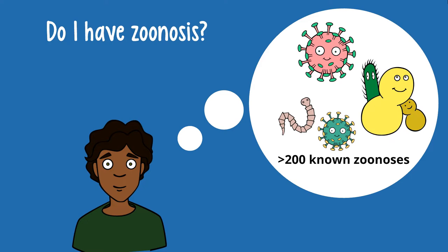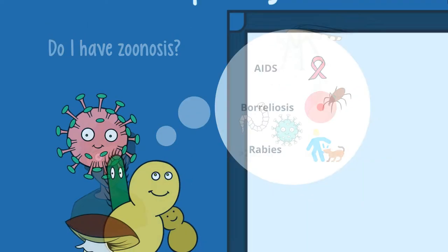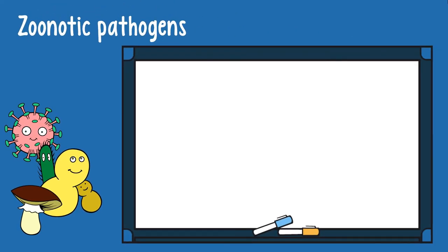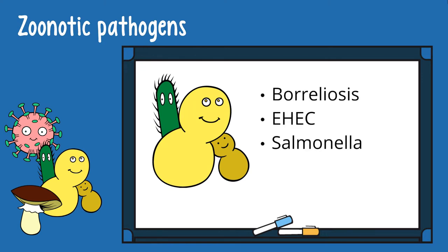Surely you have heard of some — think of AIDS, Borreliosis, or Rabies. Zoonotic pathogens include bacteria, viruses, fungi, and parasites. Examples of zoonotic bacteria are Borrelia, EHEC, or Salmonella.